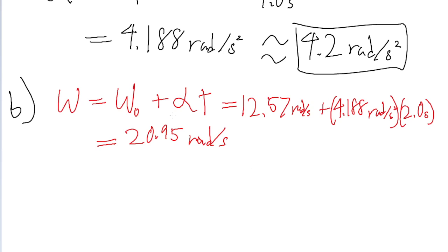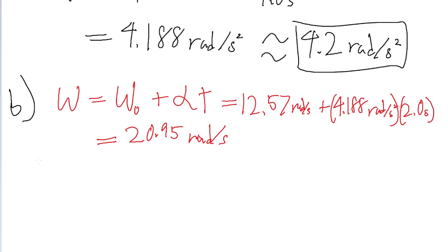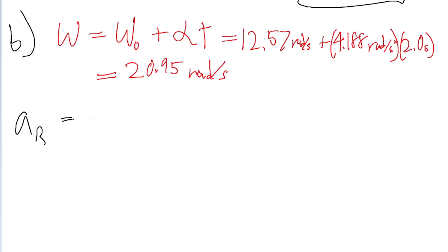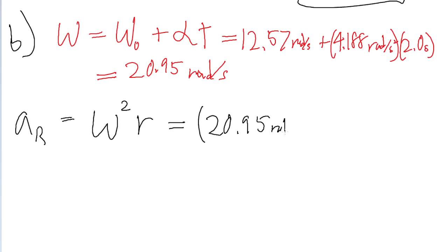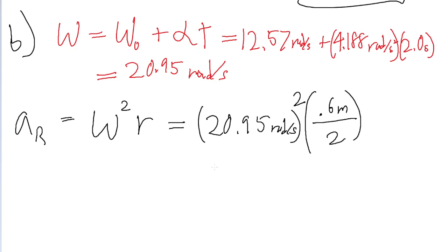Now that we have the instantaneous angular velocity, we'll use our formulas to find the radial and tangential components of the acceleration. The radial component of acceleration equals the square of the angular speed times the radius. So that's 20.95 radians per second, squared, multiplied by the radius of the wheel. The problem tells us the wheel has a diameter of 61 centimeters, or 0.61 meters, so the radius is that divided by two. Putting this into a calculator, the radial acceleration is 130 meters per second squared.